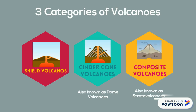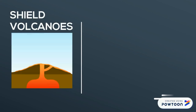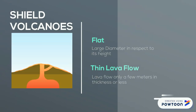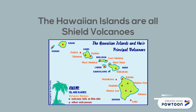To begin with, shield volcanoes, which are talked about on page 97 of the textbook, are very flat and low relative to their diameter, but large in aerial extent. They usually have thin lava flow, which is only about a few meters or less in thickness. The Hawaiian Islands are a great example of shield volcanoes, where thousands of people live.